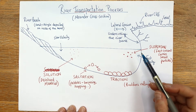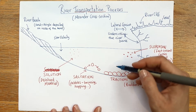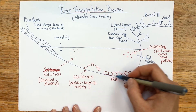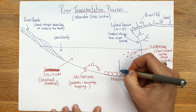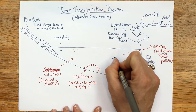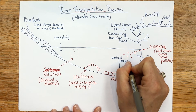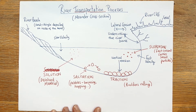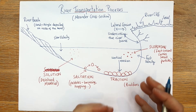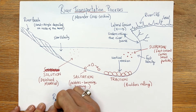Rivers don't just have lateral erosion - they also have vertical erosion. The vertical erosion has been happening where the river is getting deeper. Put a big arrow pointing downward and write 'vertical erosion'. That's basically been deepening the channel - making it deeper, scouring out the bottom of the channel.